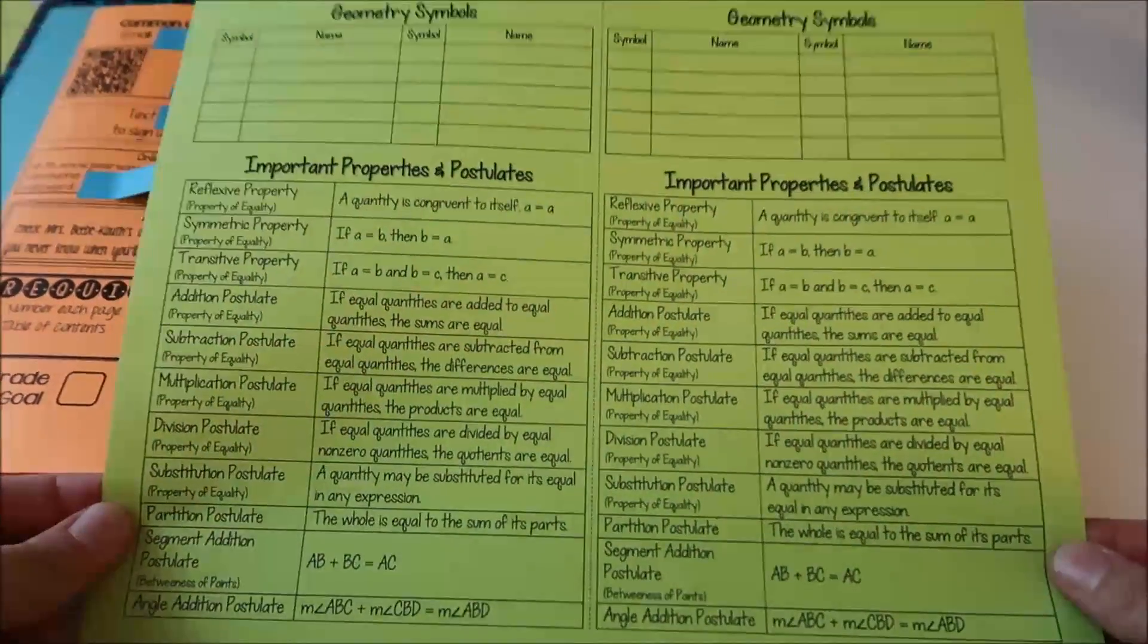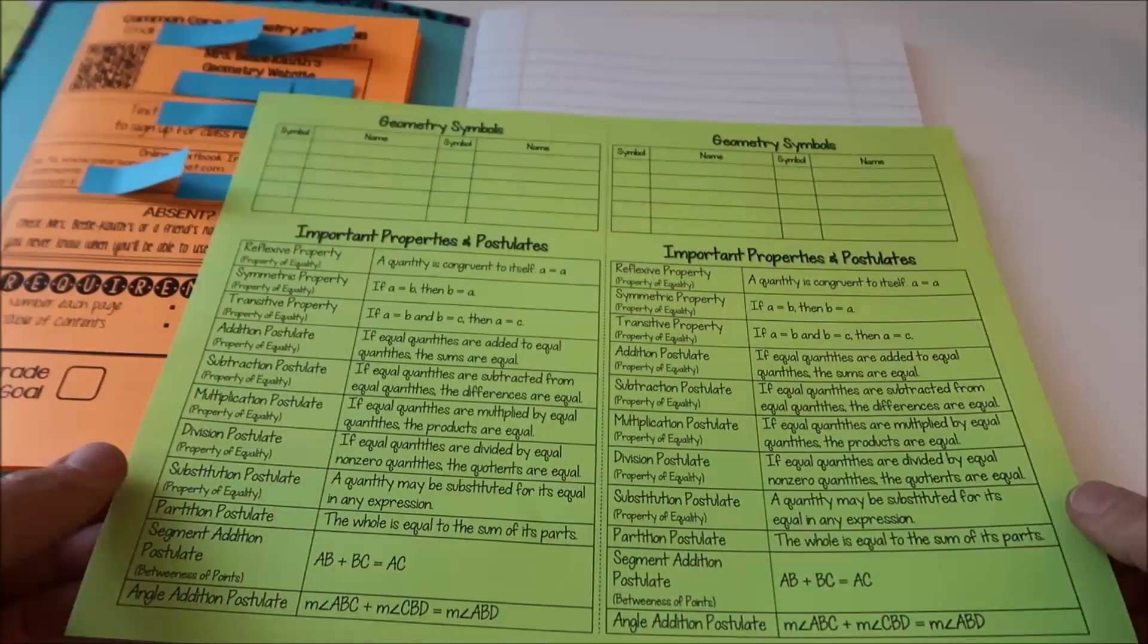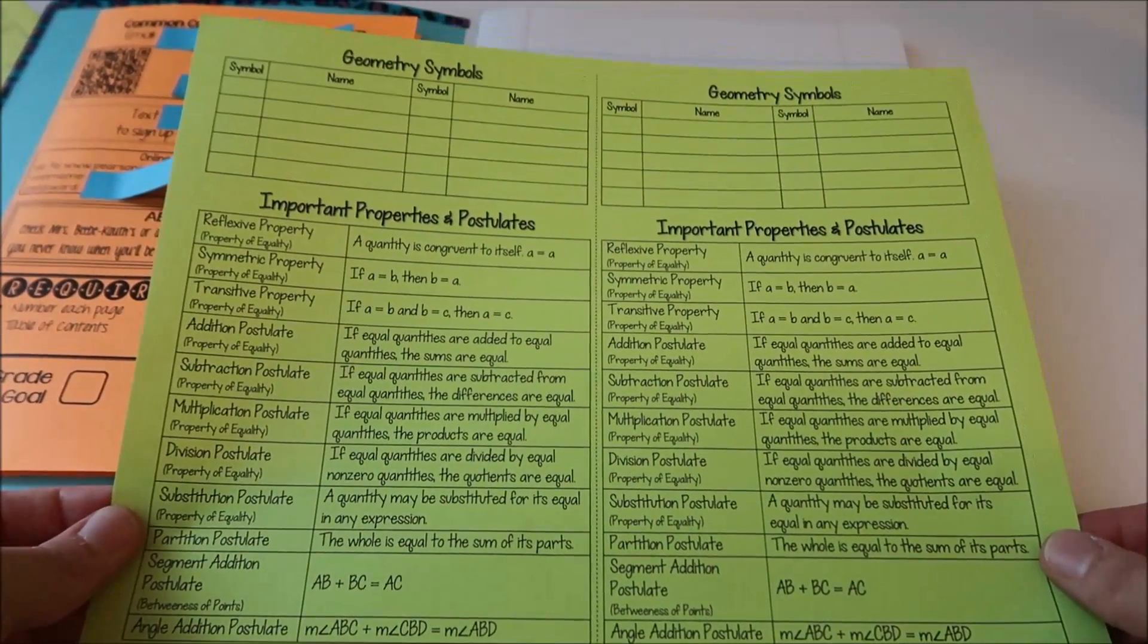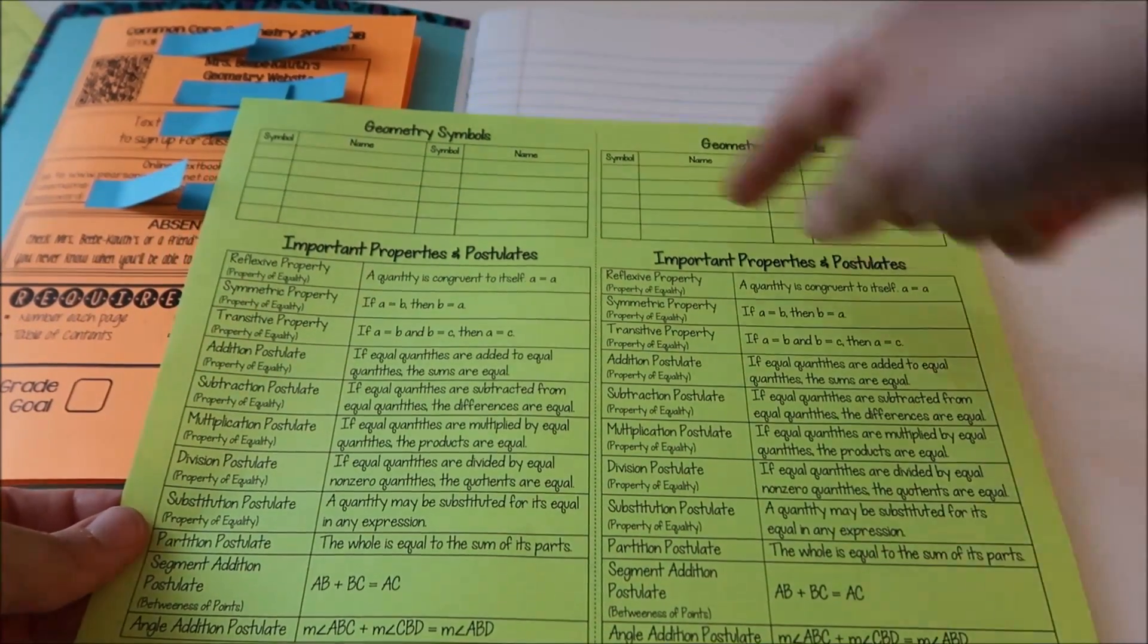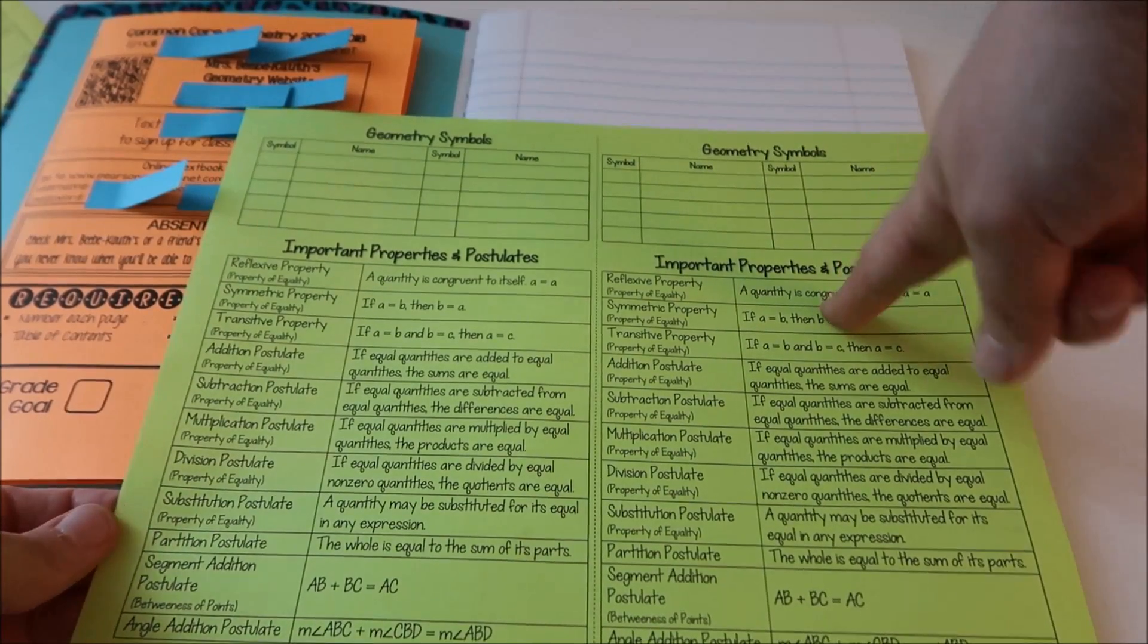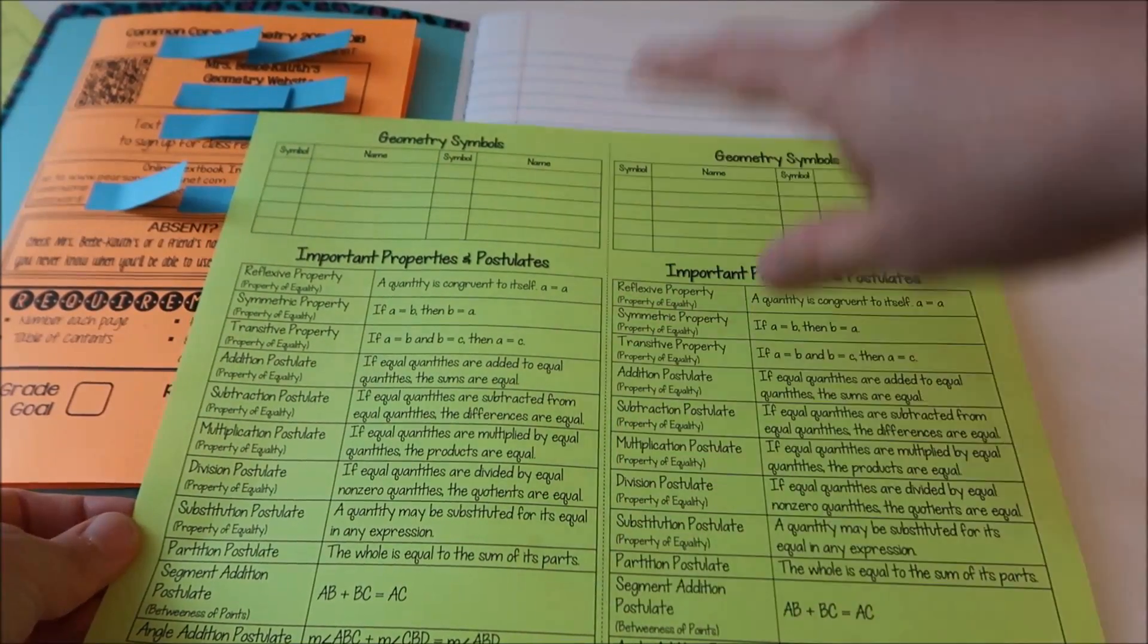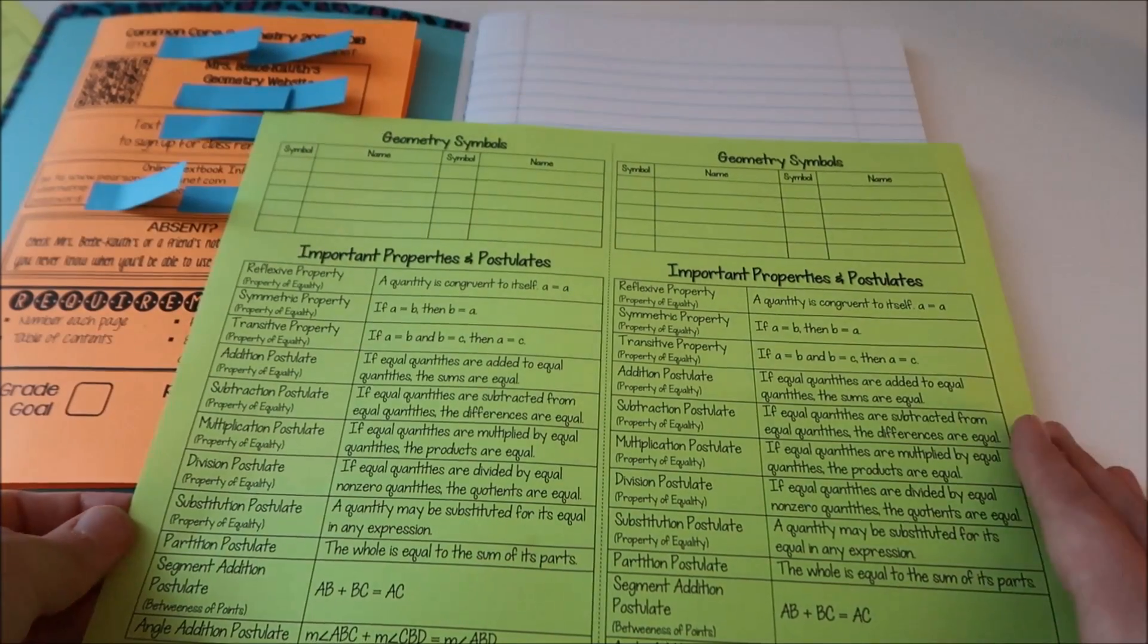When I print pages out for my interactive notebook I like to take a full eight and a half by eleven sheet of paper, put it into landscape and then I'll actually set up a table so that I can make sure that both sides are even. I put it so that I have a dotted line going down the center and then I'll put whatever I want on the pages.